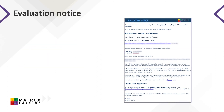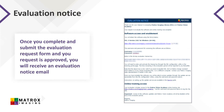If you are evaluating the software, once you complete and submit the evaluation request form and your request is approved by Matrox Imaging, you'll receive an evaluation notice email. This email is sent to the email address used in the original request form. The username and password you need to access the software update service can be found here.